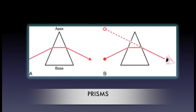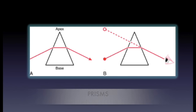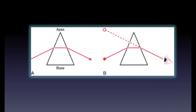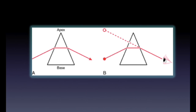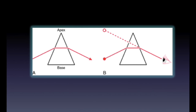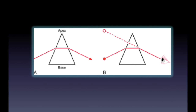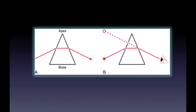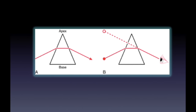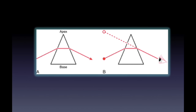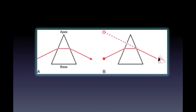Ocular deviations are measured in prism diopters. When light passes through a prism, it is bent towards the base of the prism. One prism diopter displaces the image 1 cm at a distance of 1 m from the prism. By using prisms to displace light across the retina, the deviation may be reduced and eventually neutralised when no movement of the eyes occurs.